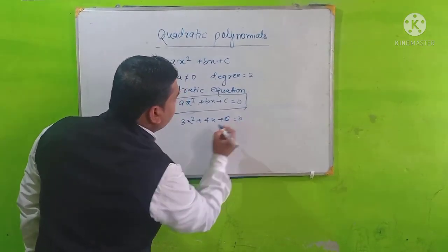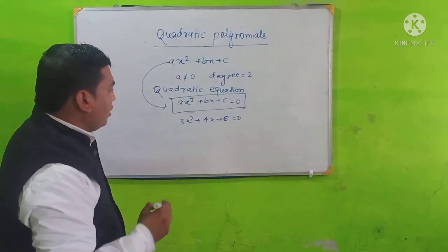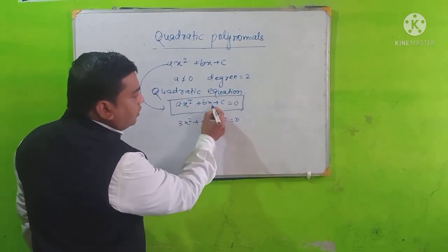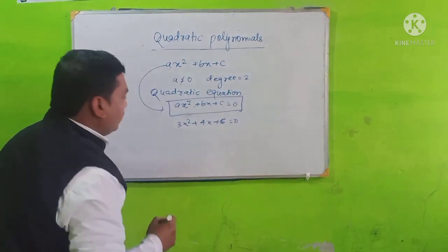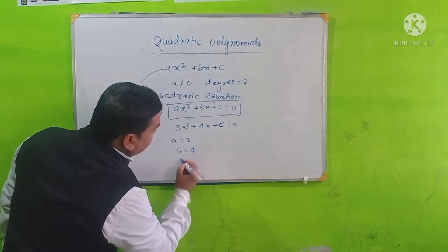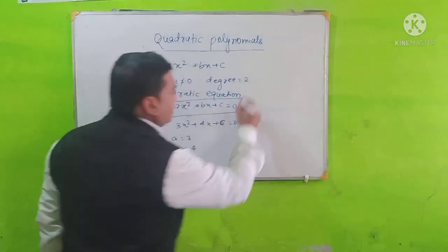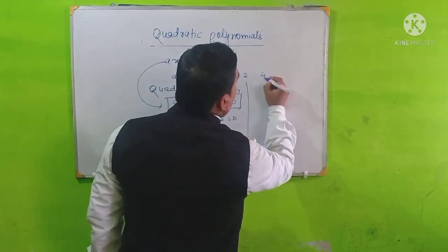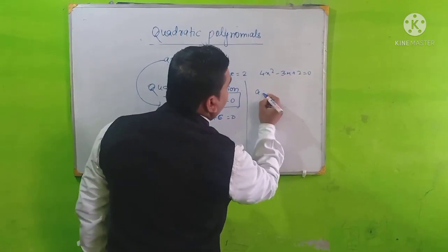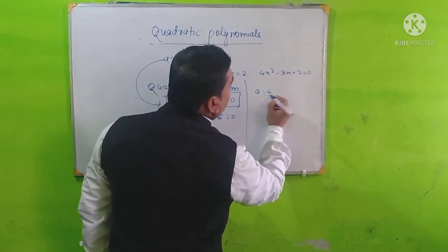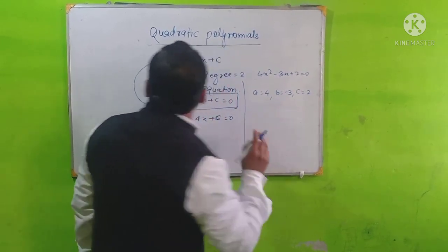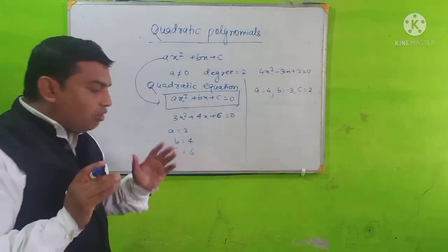Let's see the example: 3x squared plus 4x plus 6 is equal to 0. This is a quadratic equation. Here a is the coefficient of x squared, b is the coefficient of x, and c is the constant term. So a is equal to 3, b is equal to 4, and c is equal to 6. Another example: 4x squared minus 3x plus 2 is equal to 0. Here a is equal to 4, b is equal to minus 3, and c is equal to 2.